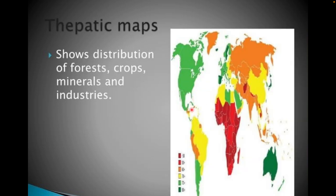The last one is the thematic map. In this map, we show the proper distribution of how much forest there is, how much mineral there is, and how many industries there are. For example, this portion shows forest, this is an industrial area, and this shows mineral deposits — all shown through thematic maps.